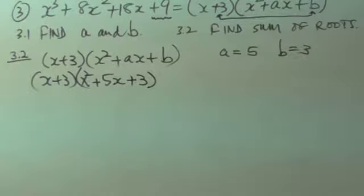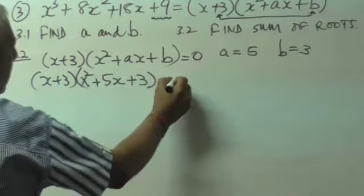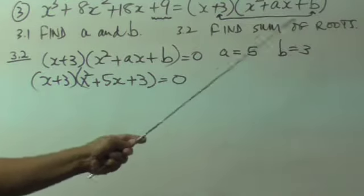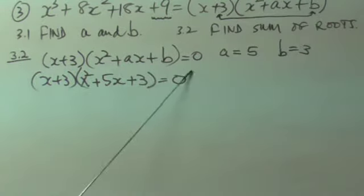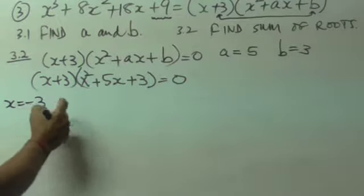And because they're saying find the sum of roots, it means I must make this equal to 0 and I must solve an equation. Because they said find the sum of roots, it means I must make this an equation, find the answers, and add the answers up. Now, this answer is clearly x is equal to minus 3.